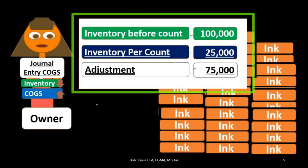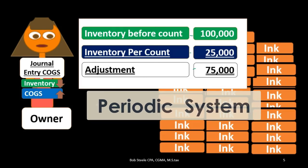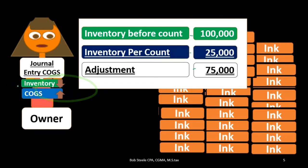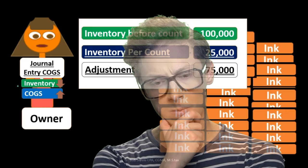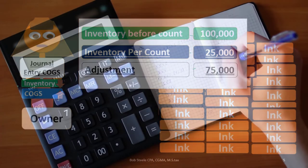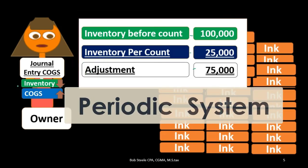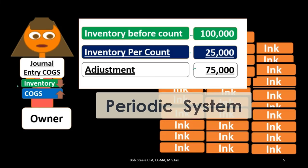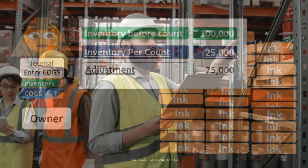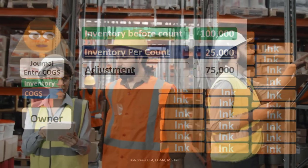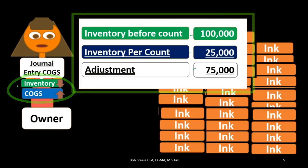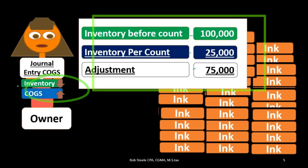It's important to note that the physical count is a necessary part of the periodic system. Without it, we would not know cost of goods sold or inventory. This might lead us to think the perpetual system has no use for a physical count — but that's not true. In a perpetual system, the physical count is used to double-check that inventory is correct and to identify problems such as shrinkage, spoilage, theft, or damaged inventory.